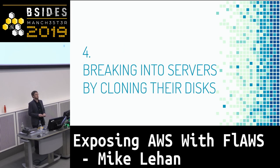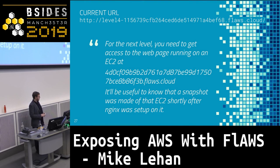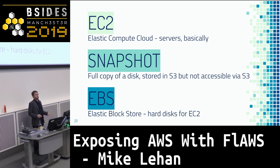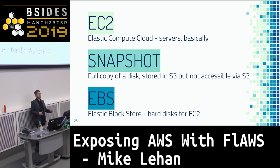We're going to learn to break into servers by cloning their hard disks — something you couldn't do before the cloud. Once again we have a level URL, and we're told that a snapshot was made of this EC2 instance right before Nginx was set up on it. EC2 is Elastic Compute Cloud — basically Amazon's VPS offering. A snapshot is a full copy of a disk stored in S3. Unlike a lot of things in S3, you can't access it through the regular S3 command line, but it inherits S3's sharing and access vulnerabilities. EBS is Elastic Block Store — basically hard disks.